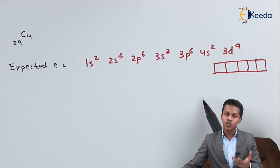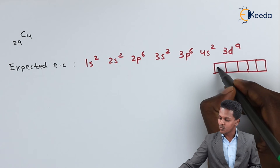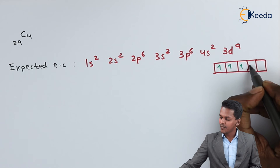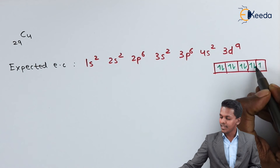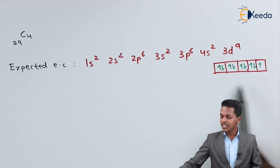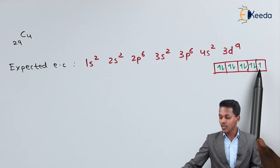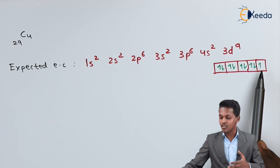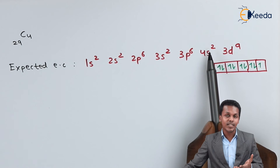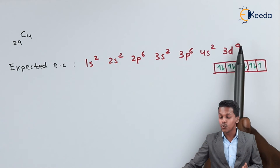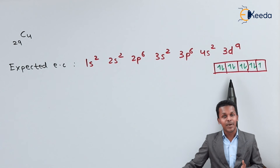The d sub-shell consists of 5 orbitals. Because of Hund's multiplicity rule, we can fill the electrons: 1, 2, 3, 4, 5, 6, 7, 8, 9 electrons in the d orbitals. Here we can find that the d orbitals are not symmetrical because one of the d orbitals is not completely filled.